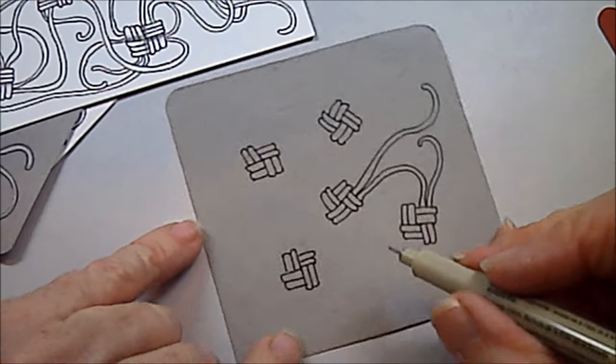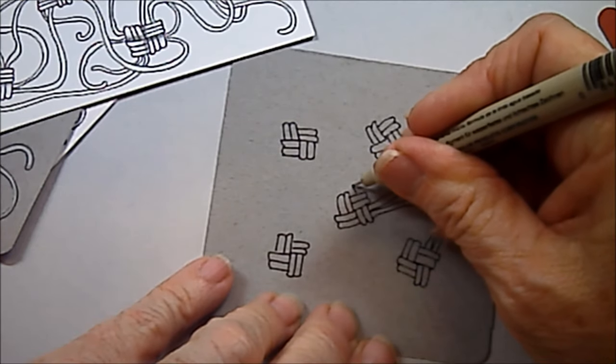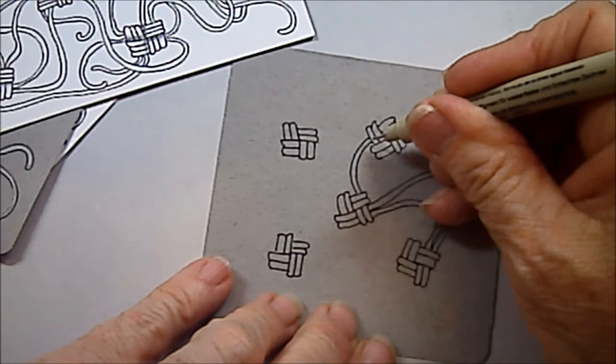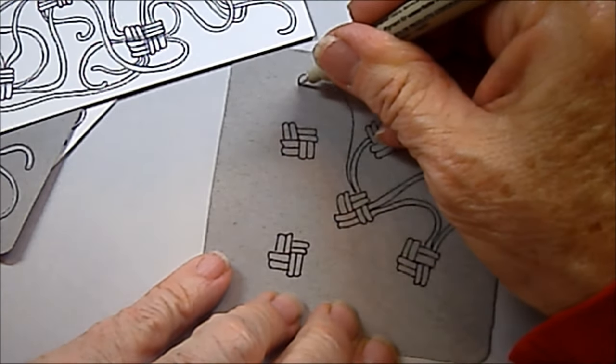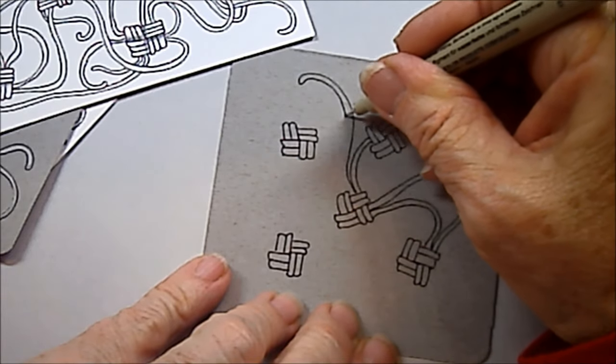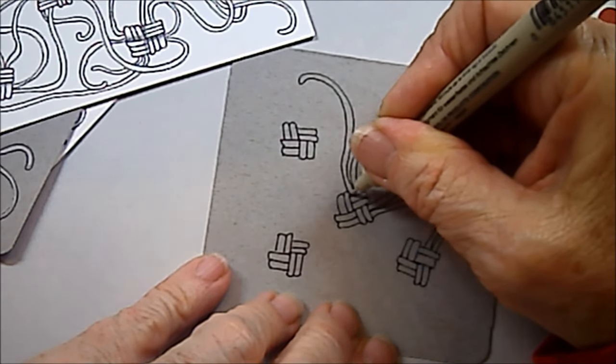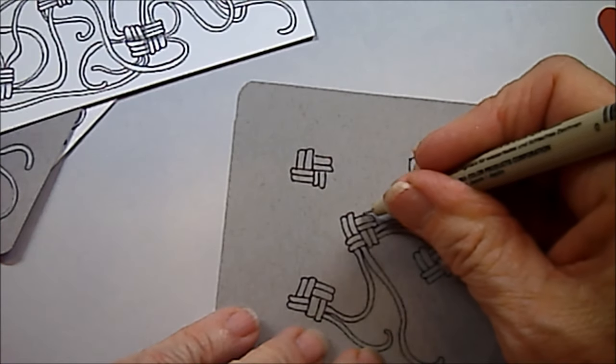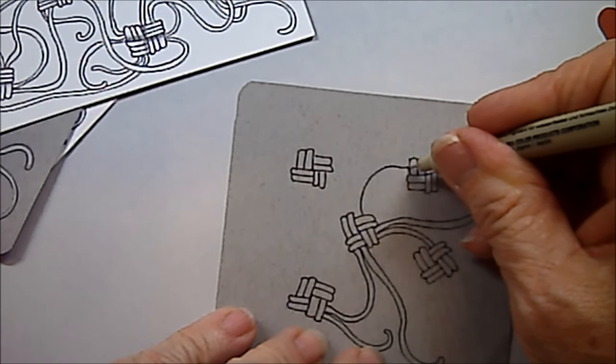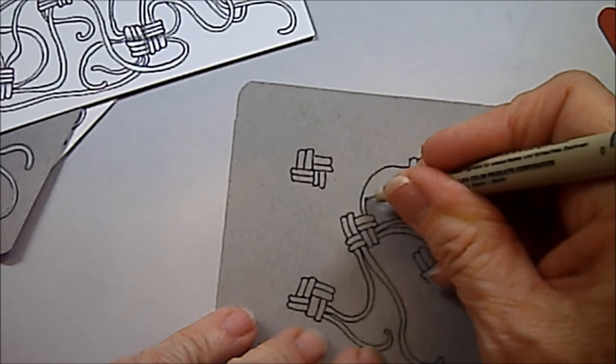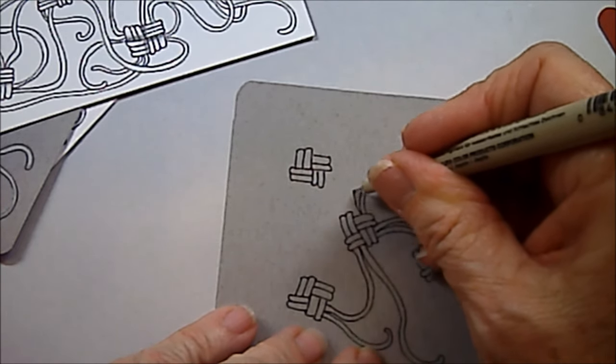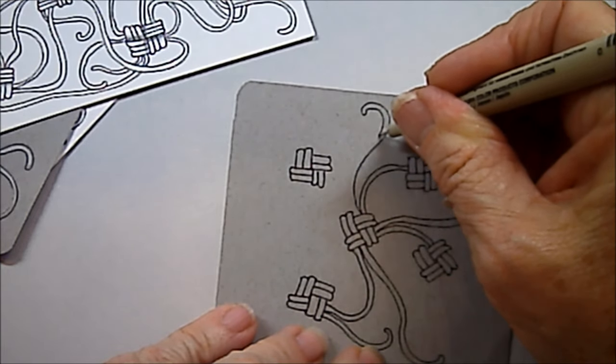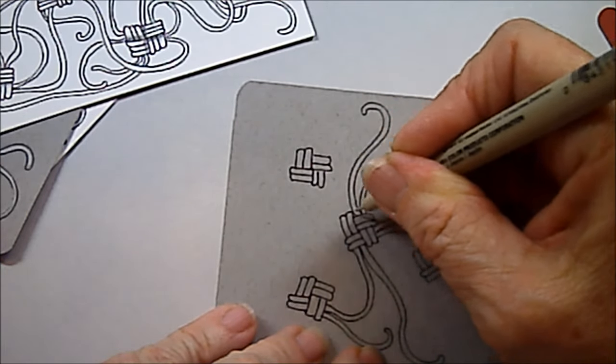So out of every one of these little areas, I'm going to draw a rope or string coming out. But I can have my rope come and go into the side of one next to it. Or I can have it come and just be a tail on its own.